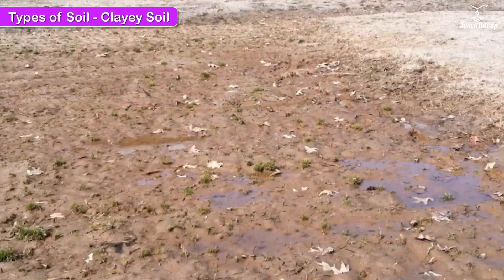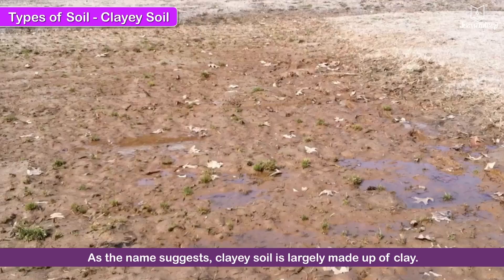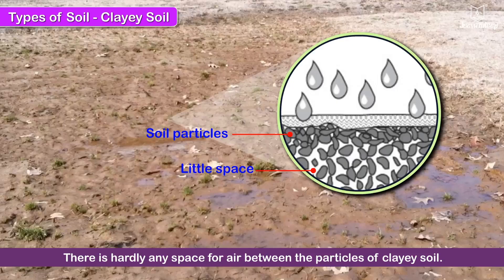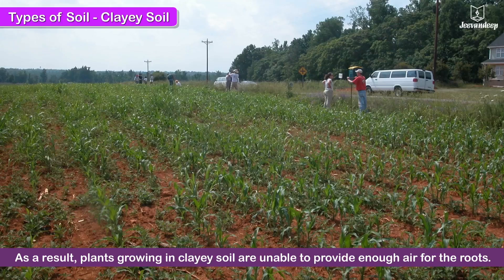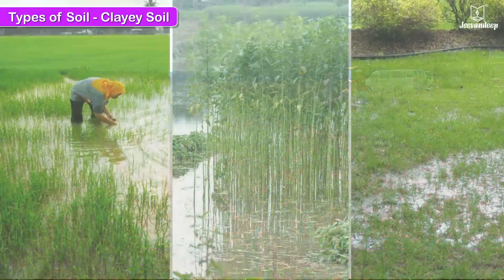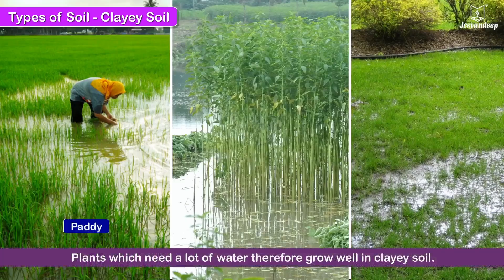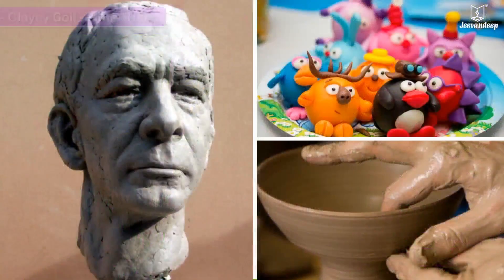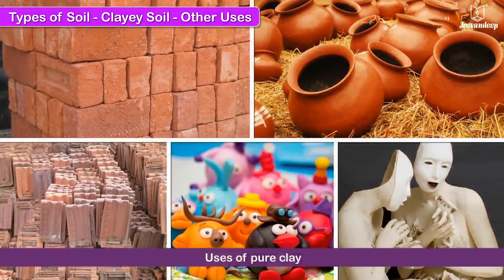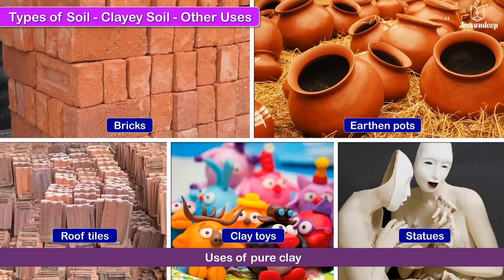Clay soil is largely made up of clay. There is hardly any space for air between the particles of clayey soil. As a result, plants growing in clayey soil are unable to receive enough air for the roots. Plants such as paddy, jute and certain types of grasses need a lot of water and therefore grow well in clayey soil. Pure clay is used to make bricks, earthen pots, roof tiles, clay toys, statues, etc.